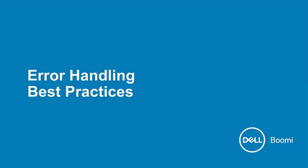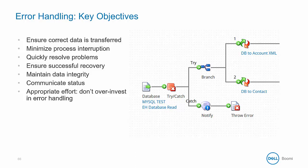Let's consider some best practices for error handling. You want to ensure that correct data is being transferred and minimize interruptions by being able to catch and handle errors. We want to quickly resolve problems, ensure successful recovery, and maintain data integrity for data flowing through our processes. We want to communicate status to responsible parties. And lastly, we want to invest appropriate effort — not over-engineer the process, but be aware of errors and have a plan to handle them.